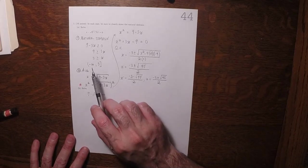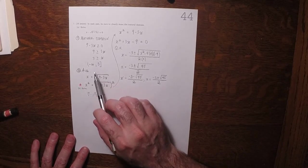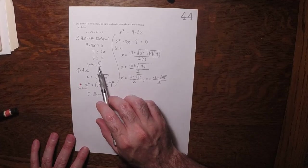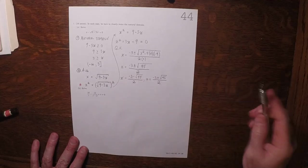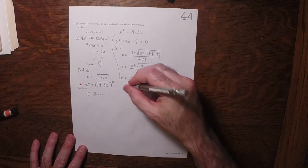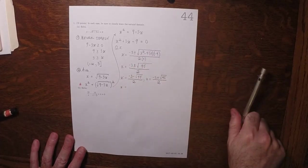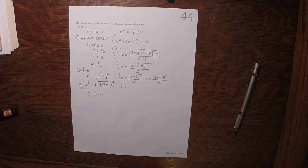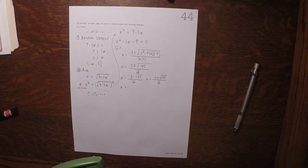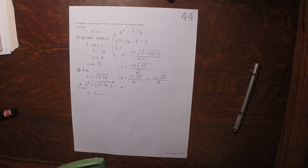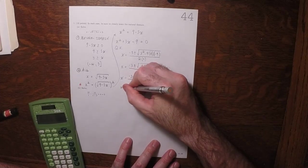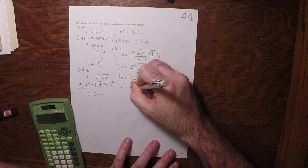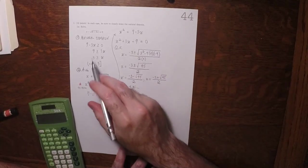In order to be in the natural domain, you have to be from negative infinity to 3. So let's check this number right here. Plugging it into a calculator, it's clearly going to be negative. Negative 3 minus the square root of 45 over 2, well, that starts out with negative 4.85. So that's in the natural domain. That's good.